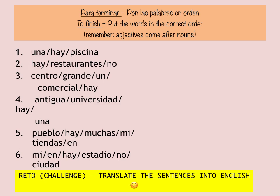By now the Spanish words for places in town should be familiar to you. Let's finish off by doing this little writing activity. Write numbers one to six in your exercise book or on your piece of paper. For each one, put the words in the correct order to make decent sentences. Remember, adjectives come after nouns — that means you put the describing word after the thing it's describing. Good luck! Pause the recording now to give you time to write down your answers. And if you want a challenge — un reto — translate the sentences into English.